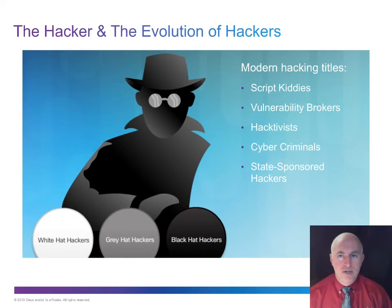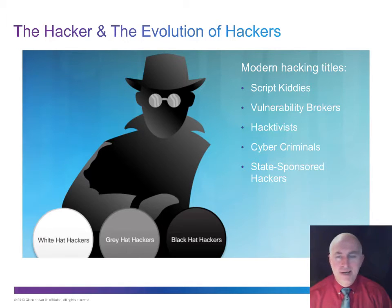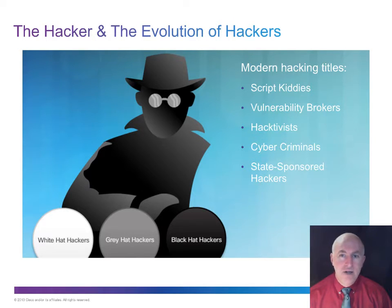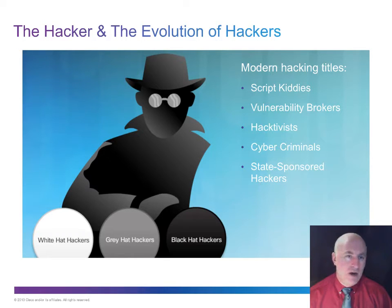Hackers generally fall into five categories. Script kiddies are amateurs who don't really know what they're doing — they downloaded software off the internet, click next-next-next, and the software attacks the network for them with little skill involved. Vulnerability brokers prey on a particular vulnerability of a specific system or software — they only know one thing, like a one-trick pony.